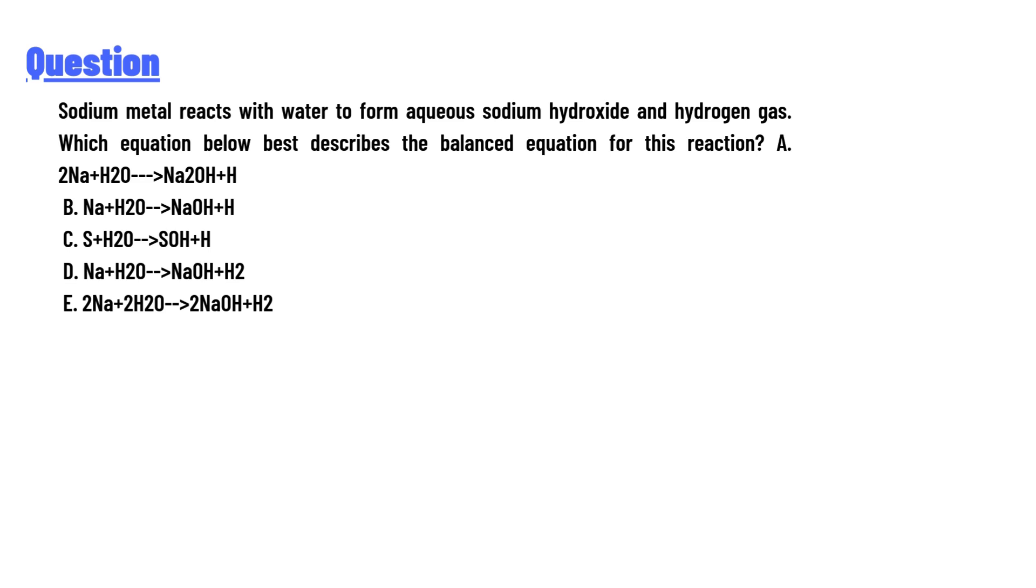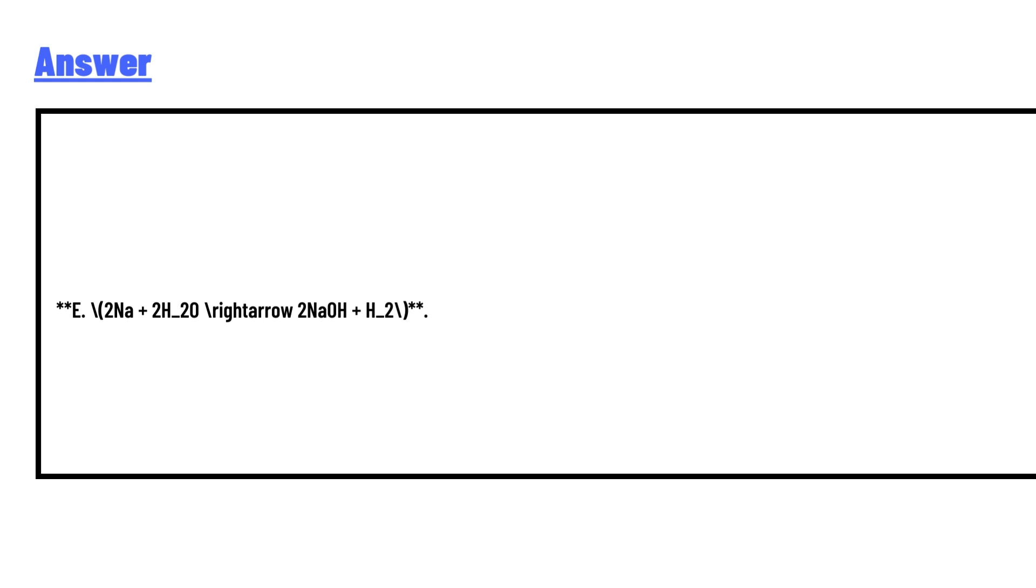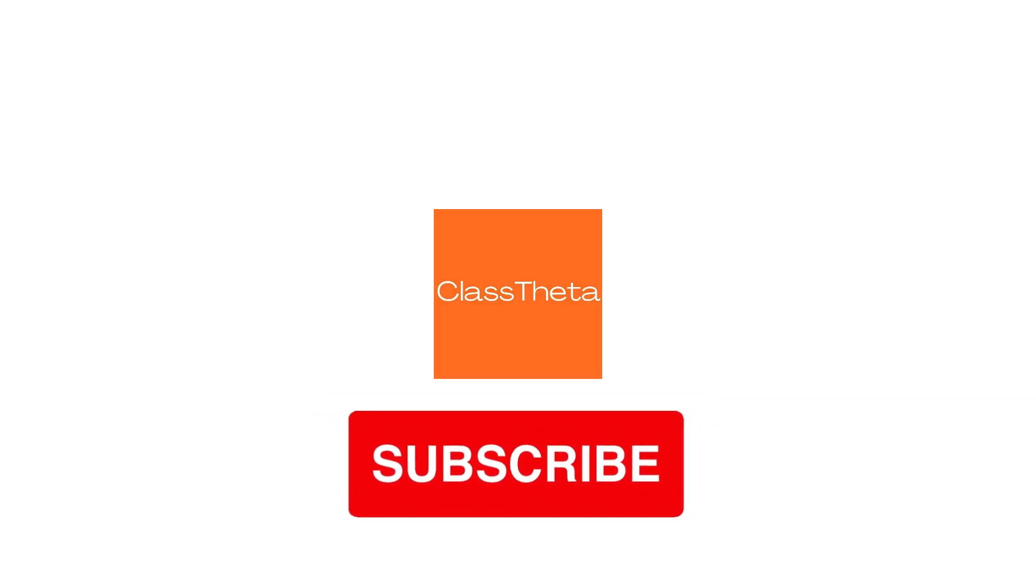The answer to the question is E: 2Na+2H2O→2NaOH+H2. This is the correct answer of the question. If you want to discuss the answer, leave a comment.